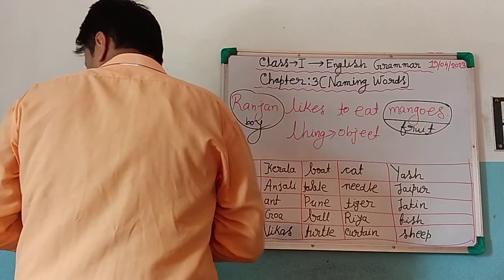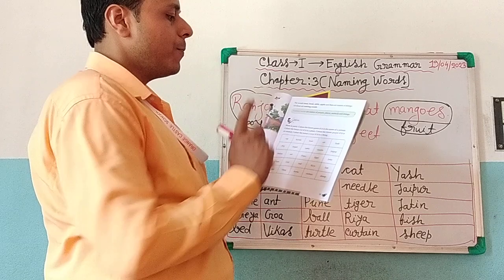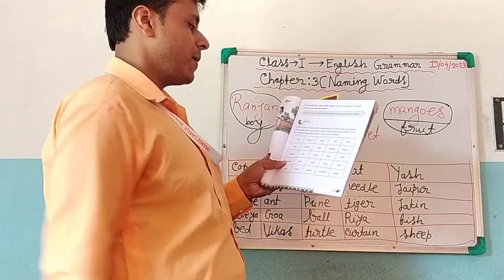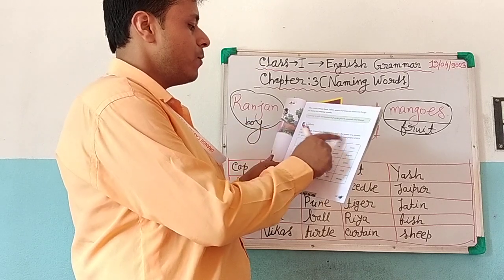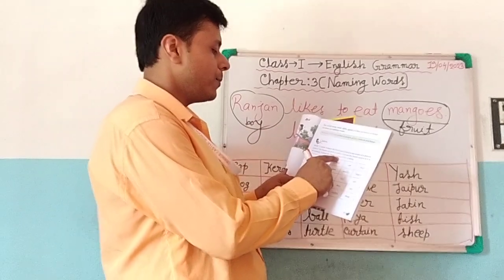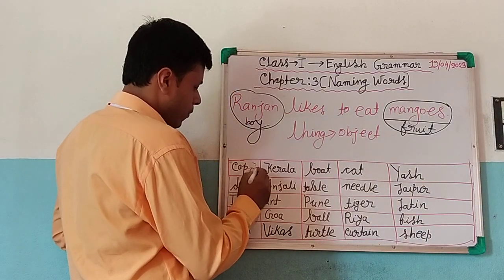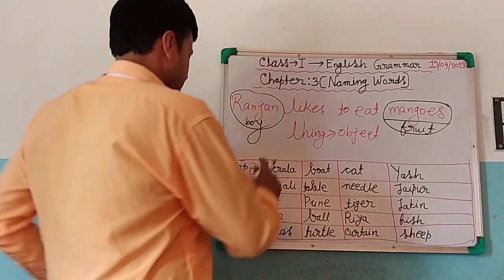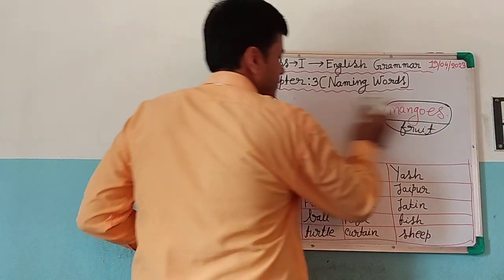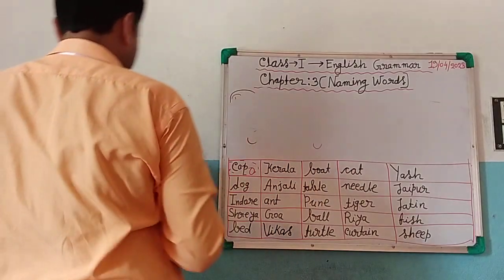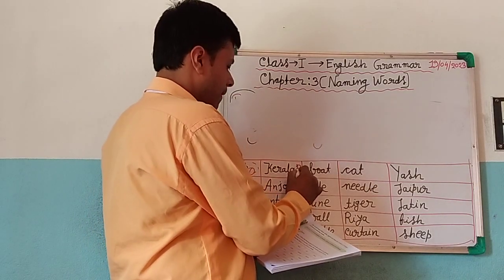So now I am giving the colors. Cap — cap is the name of a thing. Cap is not the name of a person, not a place, not an animal. Cap is a non-living thing, so give it orange color. You have to fill up the boxes with orange. Kerala — Kerala is the name of a place, so give it red color.